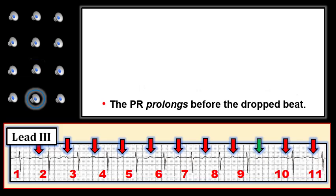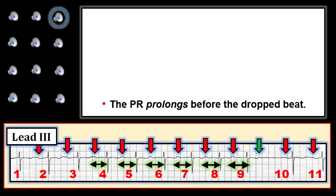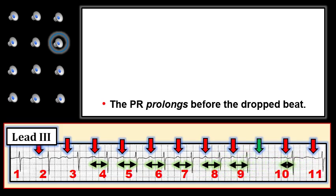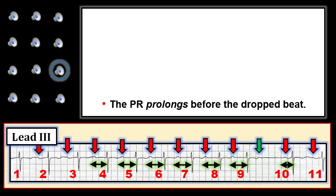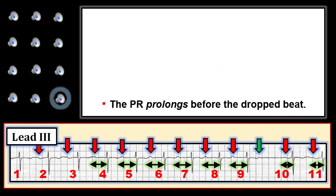The PR interval prolongs before the dropped beat. Note that this isn't obvious if we go from beat to beat, because the difference in PR interval is small. But if you look at the PR interval just before the pause — prior to beat number 9 — and compare it with the PR interval just after the pause — before beat number 10 — it becomes obvious that the PR interval has lengthened until the dropped beat occurs. After the dropped beat, conduction resumes with a normal PR interval for beat number 10. Then we see the PR interval lengthen a little bit more before beat number 11 compared to the PR interval for beat number 10.